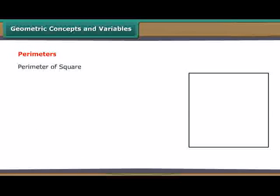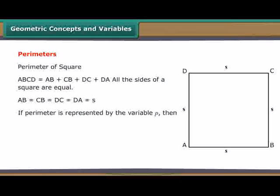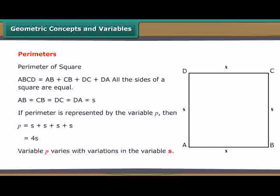Perimeter of square ABCD is equal to AB plus CB plus DC plus DA. All the sides of a square are equal. AB is equal to CB is equal to DC is equal to DA is equal to S for side. If perimeter is represented by the variable P, then P is equal to S plus S plus S plus S is equal to 4S. Variable P varies with variations in the variable S.